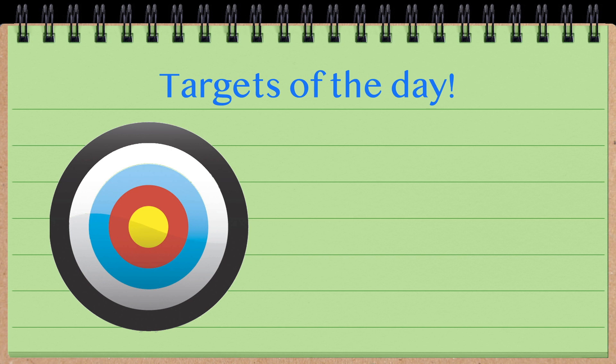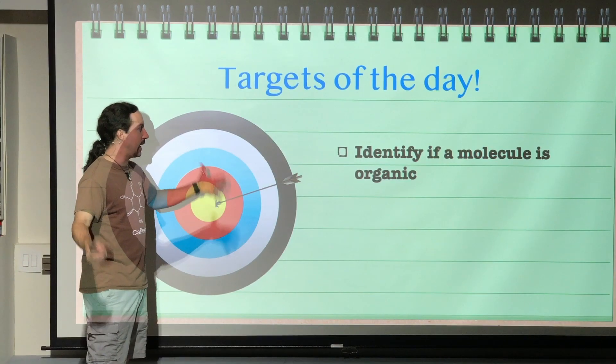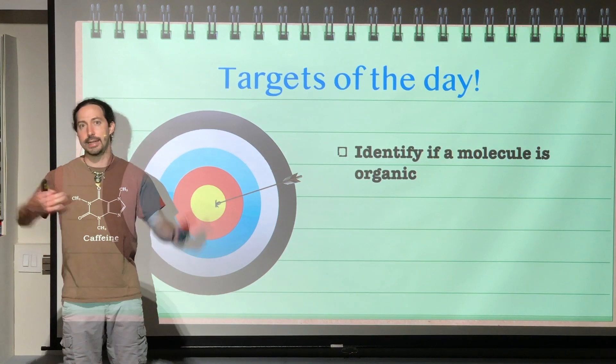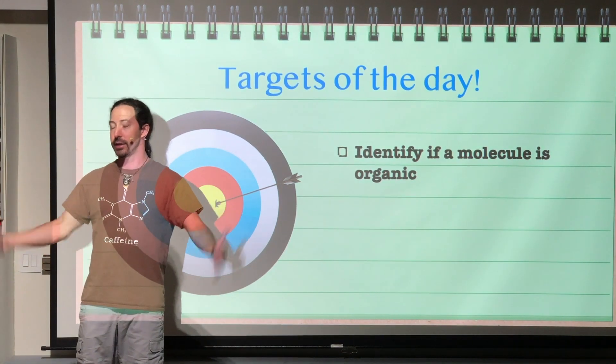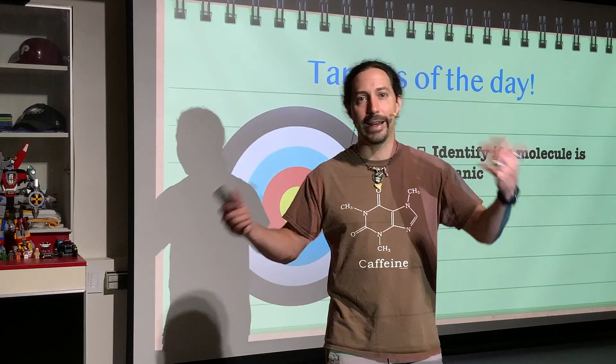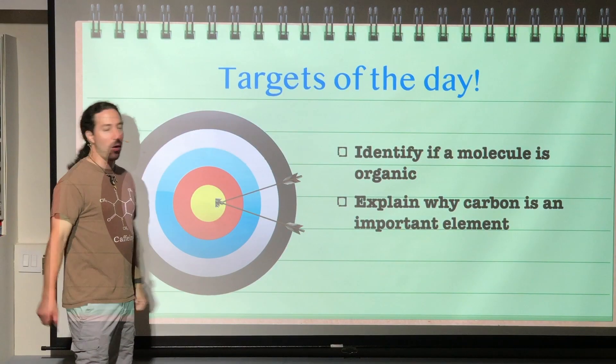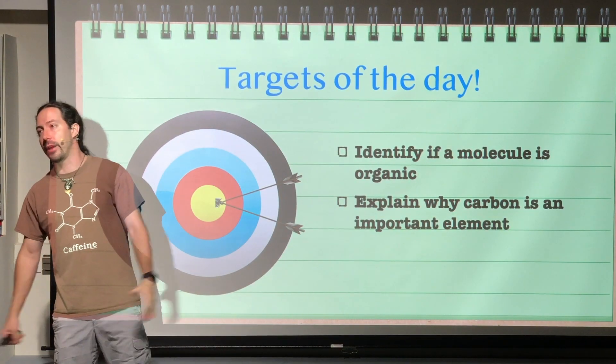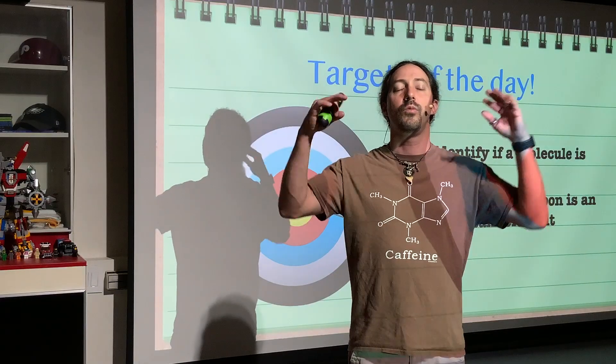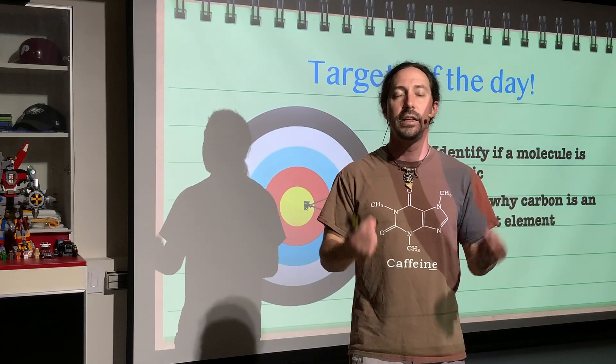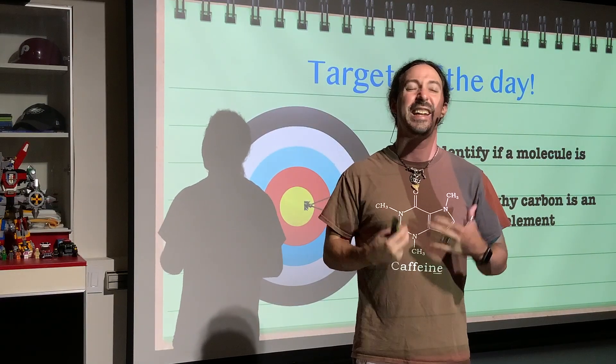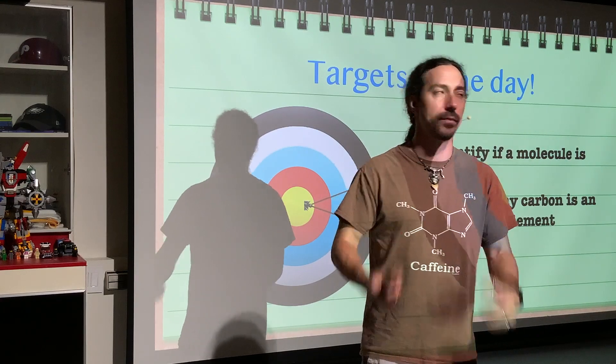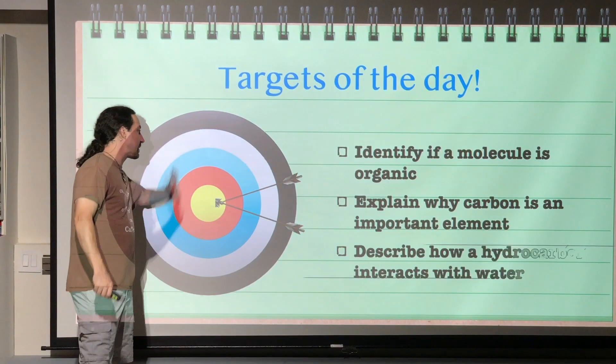So first off, targets of the day. First one is identify if a molecule is organic, so we need to understand what it actually even means for something to be called organic. Next, explain why carbon is a very important element. We need to understand a little bit about carbon because it's really, really special.